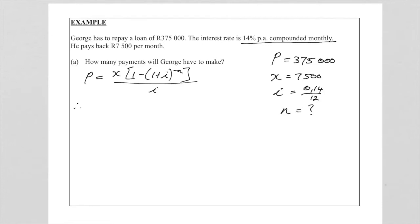So now we say P which is R375,000 is equal to my x is R7,500 times 1 minus (1 plus my interest rate 0.14 over 12) and the exponent is then minus n, remember n is what we are looking for, over i 0.14 over 12.